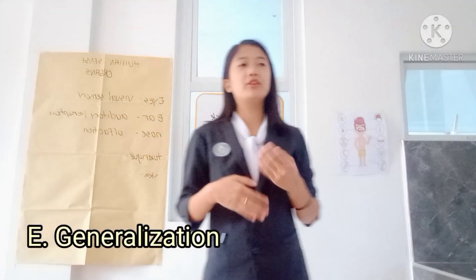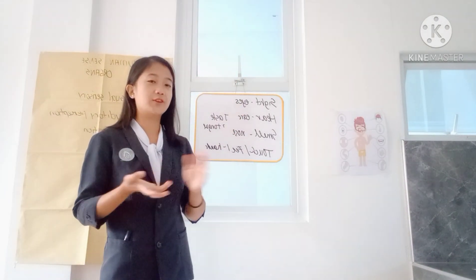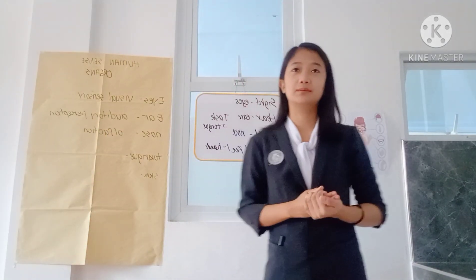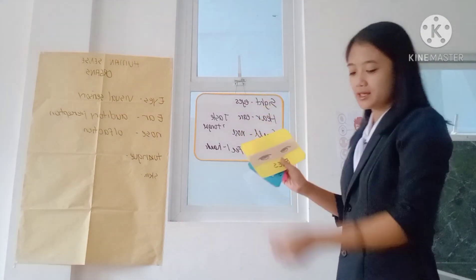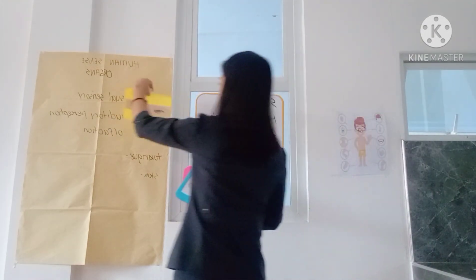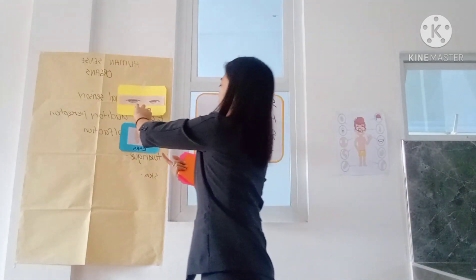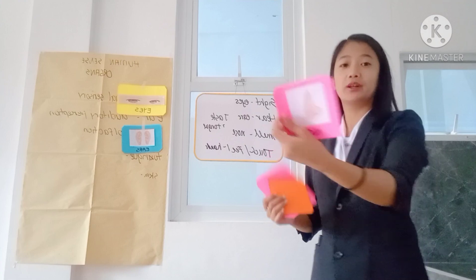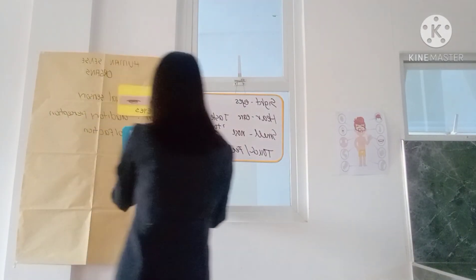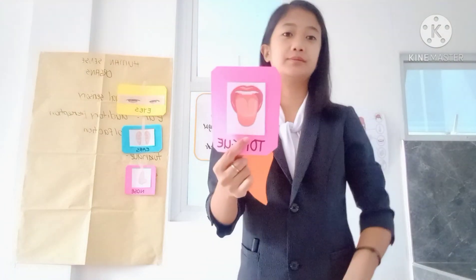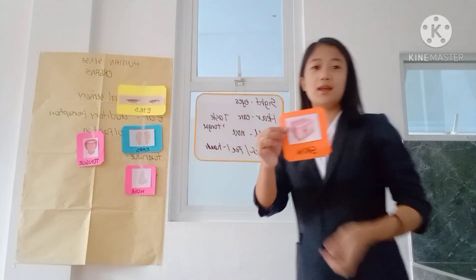Again, class, what are the five senses? Correct. What are the organs that have senses? The organs that have senses are our eyes, our ears, our nose, and lastly, our skin.